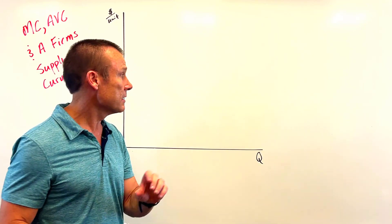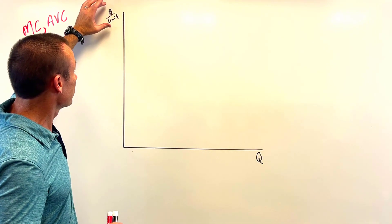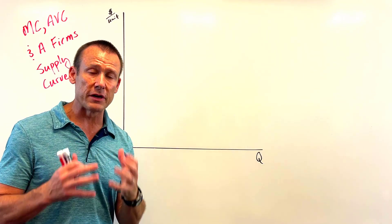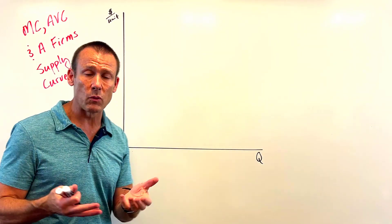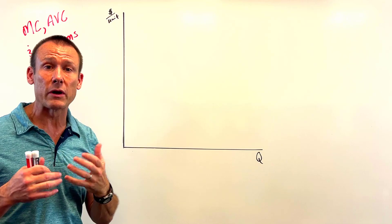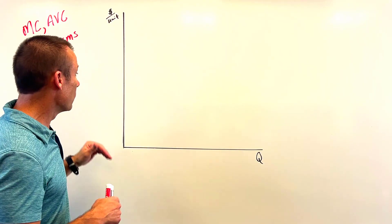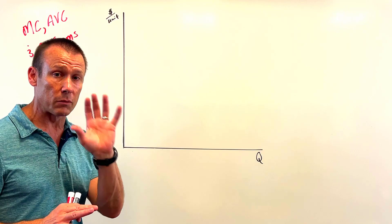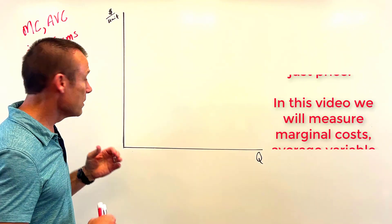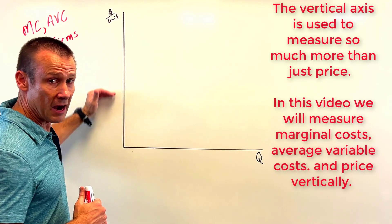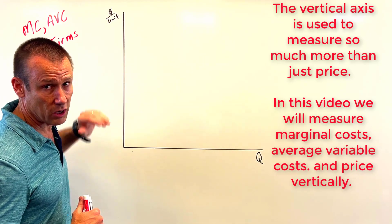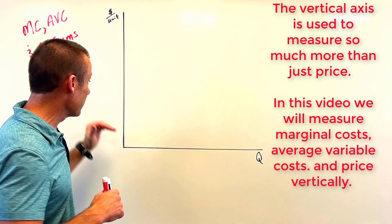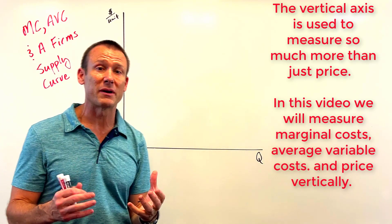Here's our graph. Notice that it's 'dollars per unit' on the vertical axis — that's a generic unit of measurement. We use the vertical axis to measure so many things: eventually we'll measure price there, but at first we're measuring average variable cost and marginal cost vertically. It's really important that students understand the vertical axis isn't just for price.